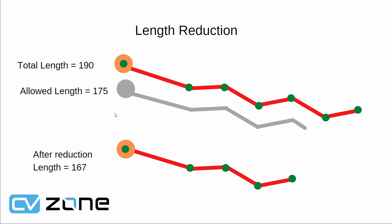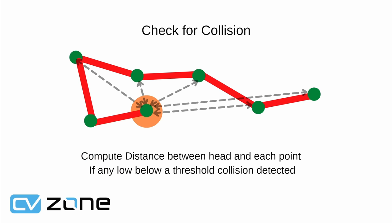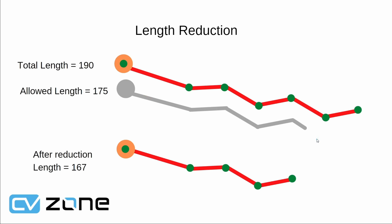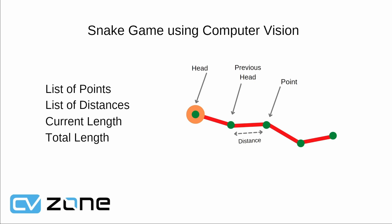The length will change a little here and there but it won't be very visible. For collision, the game ends when the head collides with the body. We take the head point and calculate distances from all the other points. If any one of those distances is lower than a threshold, we say that a collision is detected. This might seem a little overwhelming, but we will go step by step.